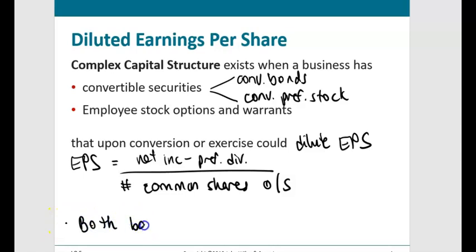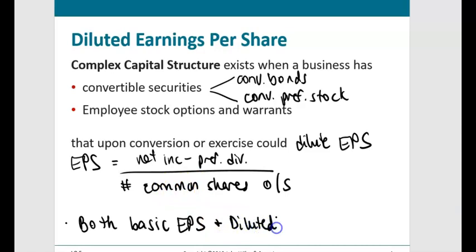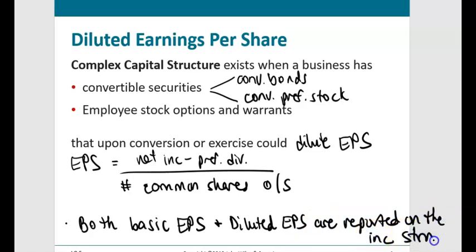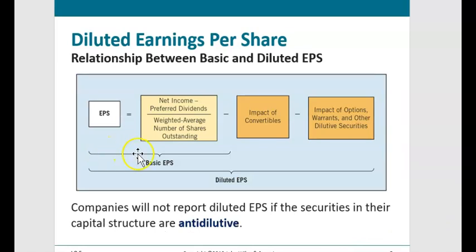Both basic earnings per share and diluted earnings per share must be reported. Diluted EPS accounts for the 'what if' — on the earliest possible date of this year, all holders of convertible securities converted and the company had to issue new shares of common stock. We start with basic EPS, then adjust for convertible bonds, preferred stock, and options or warrants converting into common stock.